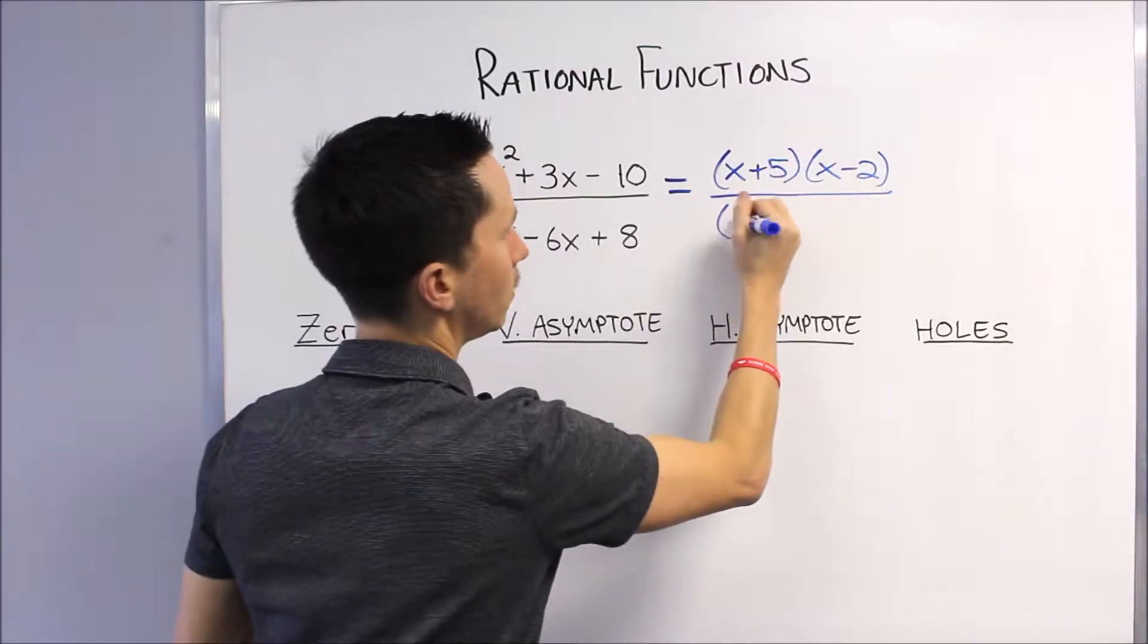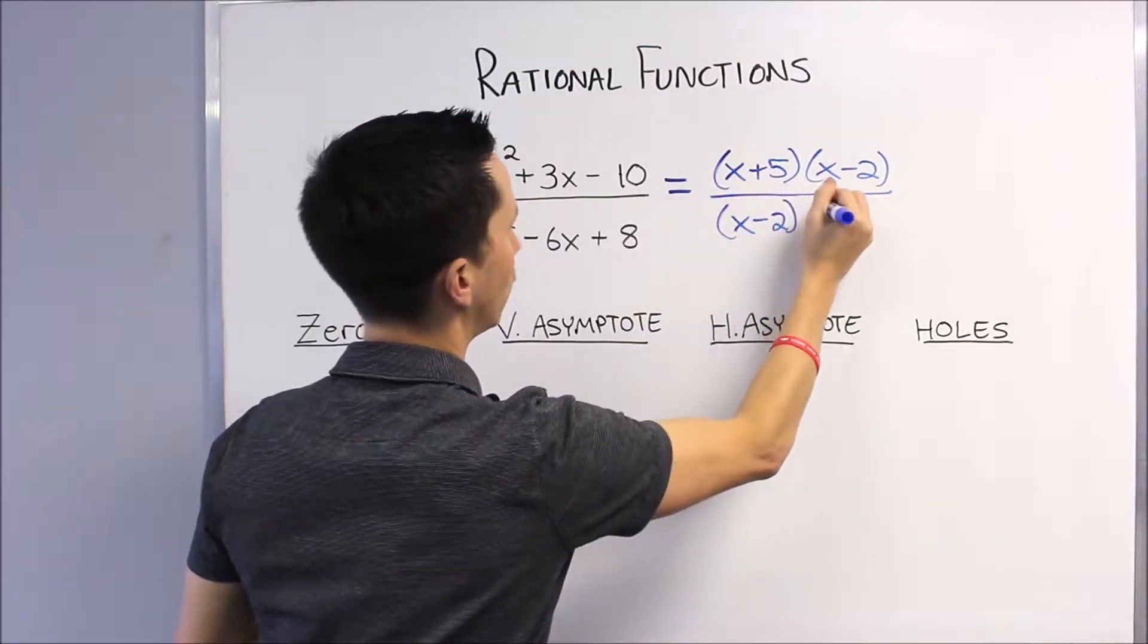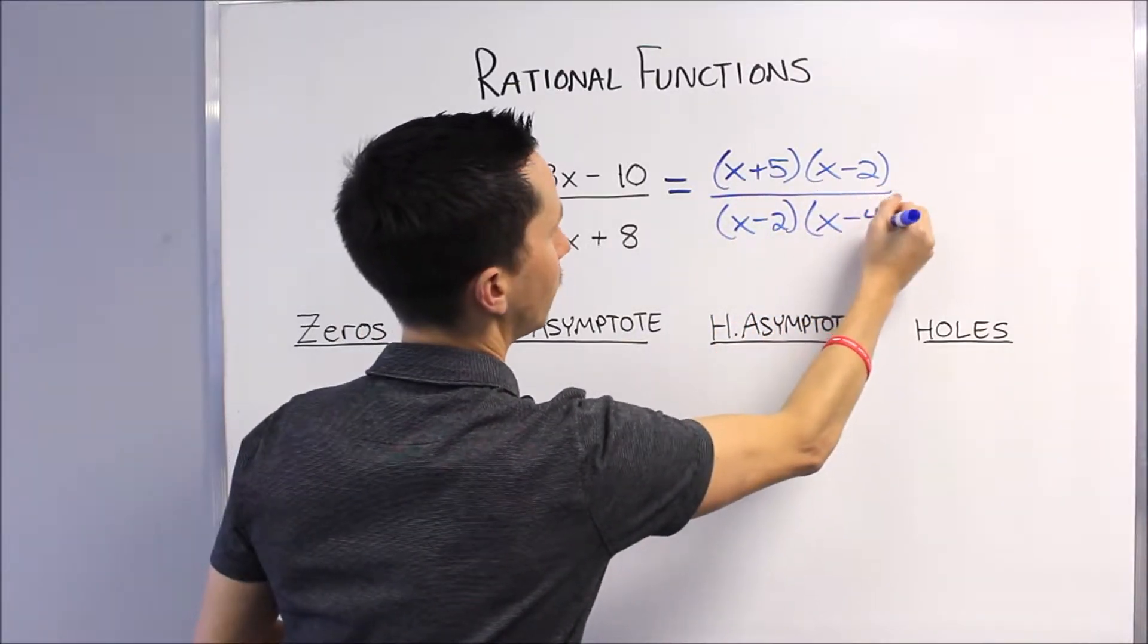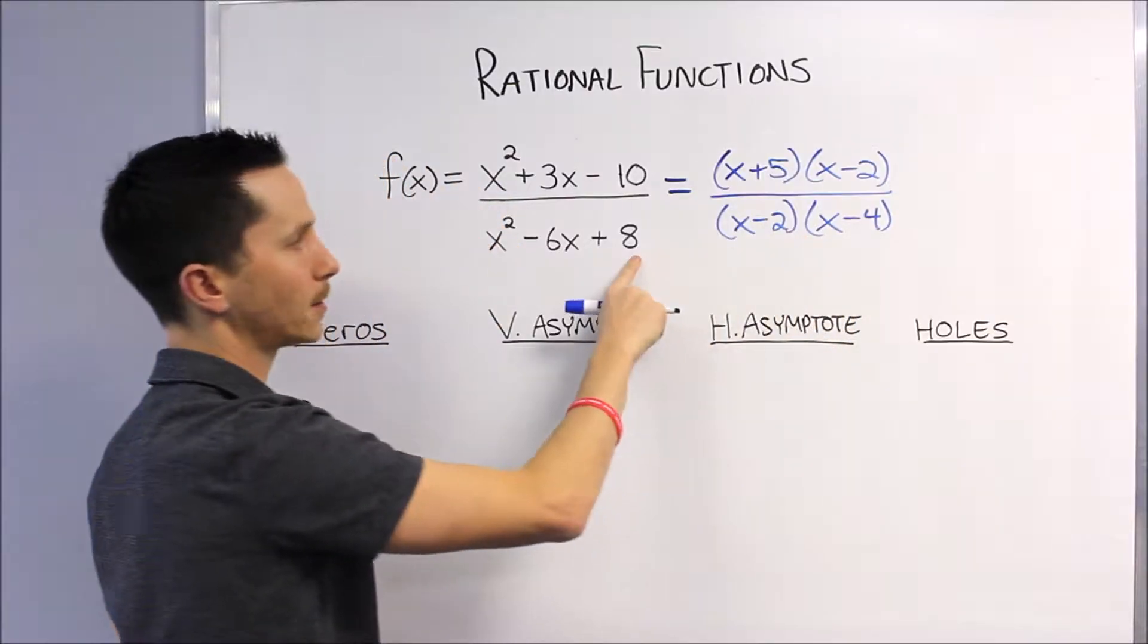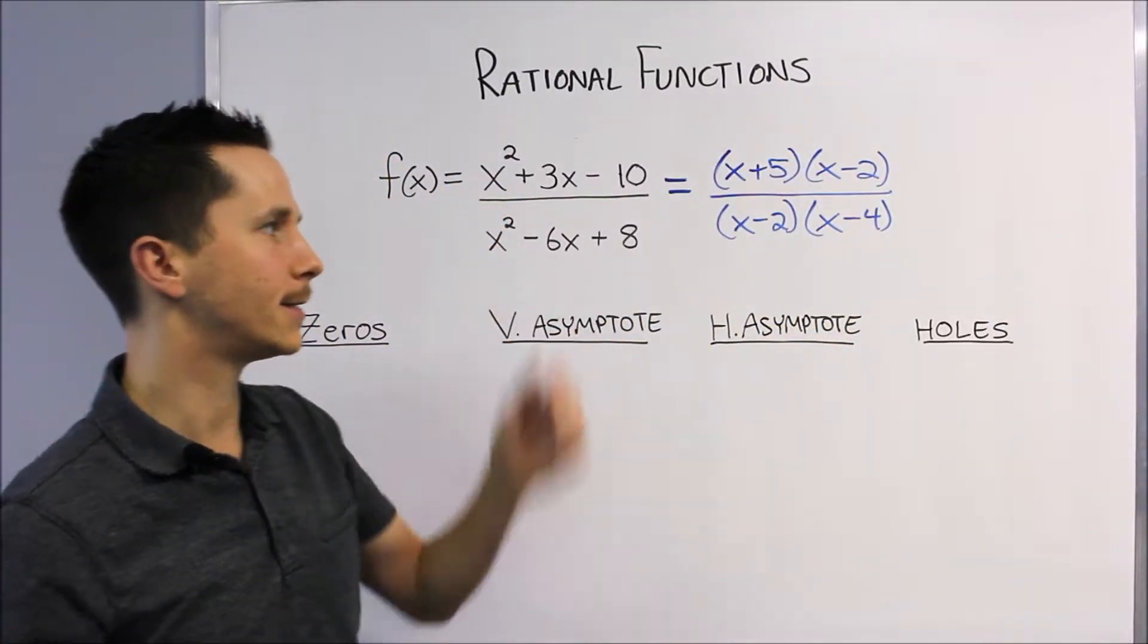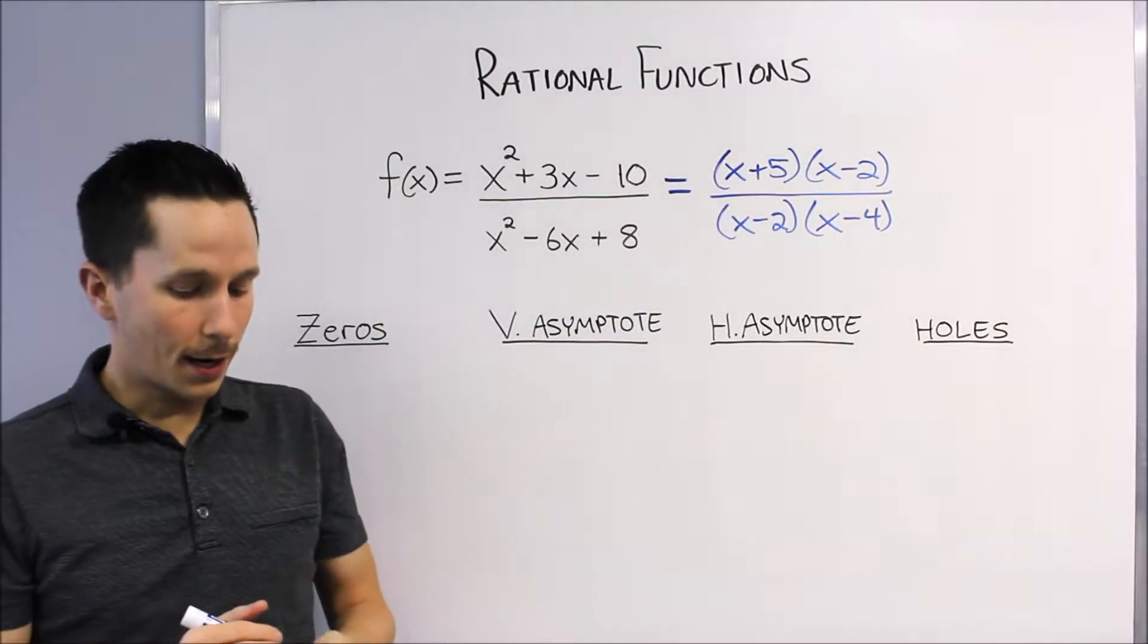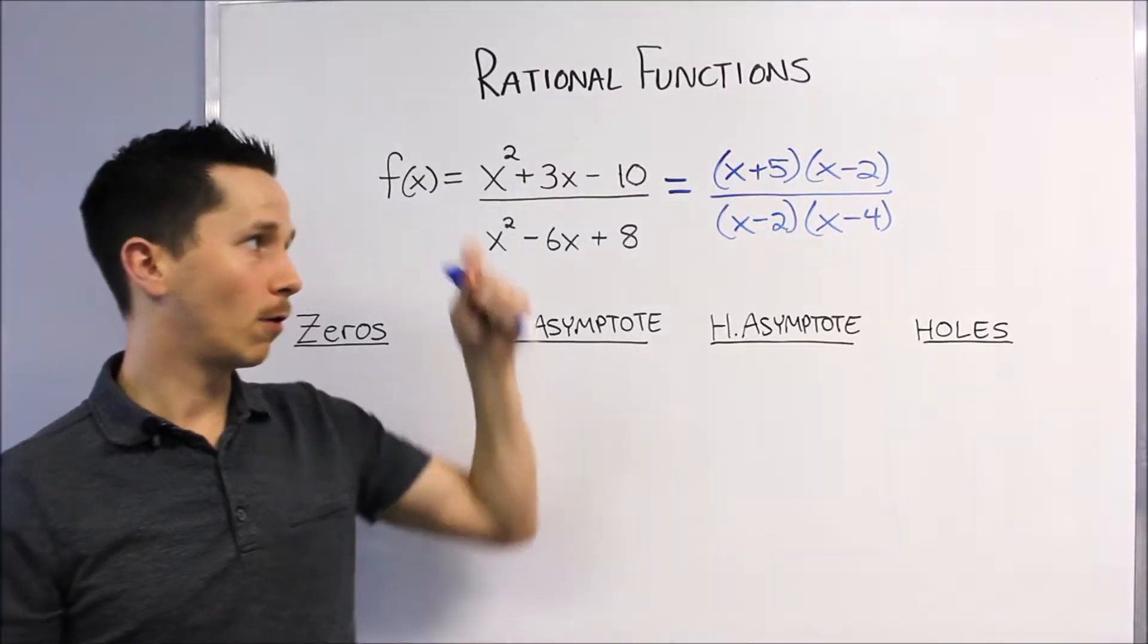Over (x - 2)(x - 4). Two numbers that multiply to positive 8 and add to negative 6: negative 2 and negative 4.